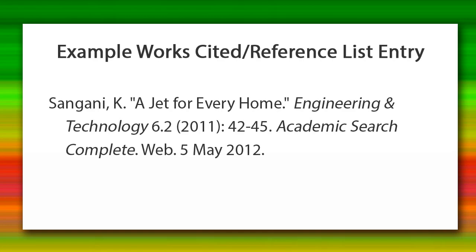You can find an article from a works cited or referenced list by using many different methods. For this tutorial, you will learn how to retrieve an article by using its cited database. This particular article is from a database called Academic Search Complete.